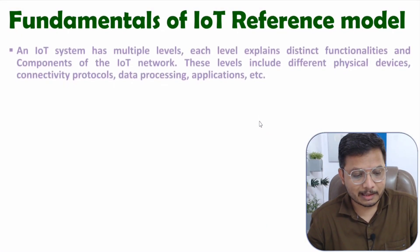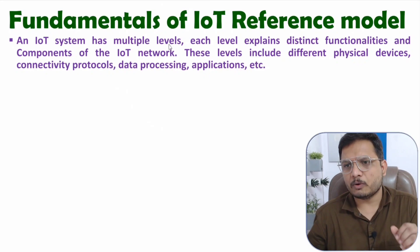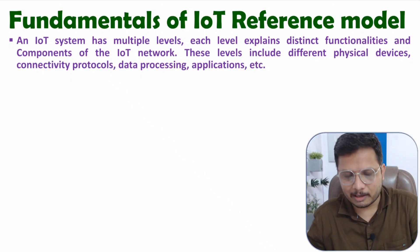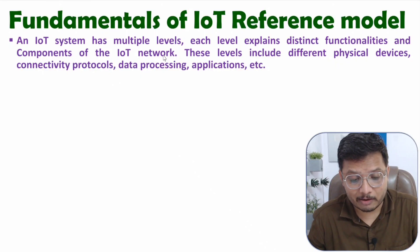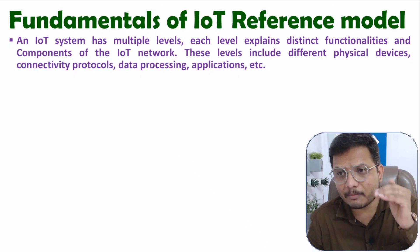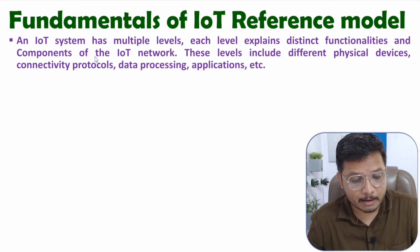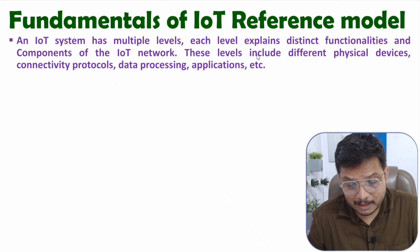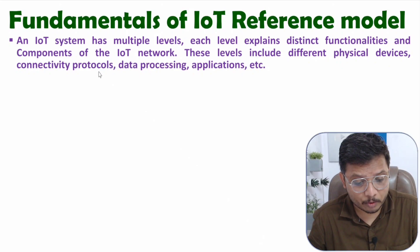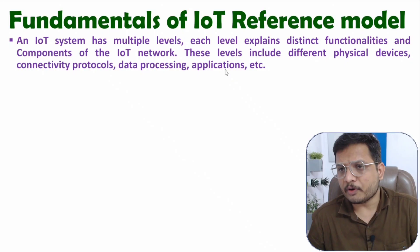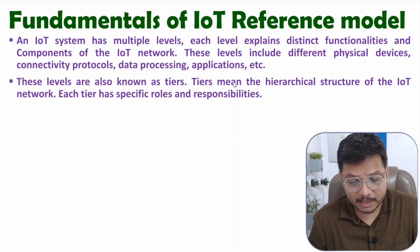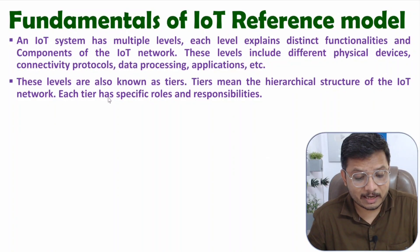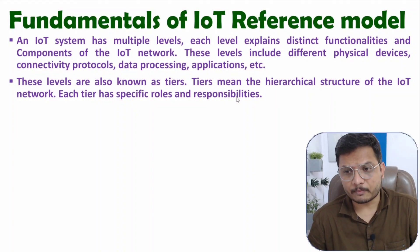To understand the basic fundamentals, you need to know that an IoT system has multiple levels, so the design of an IoT system is hierarchical. At each level there are different functionalities and components of the IoT network. These levels include physical devices, connectivity protocols, data processing, and applications. These levels are also known as tiers — a hierarchical structure where each tier has specific roles and responsibilities.